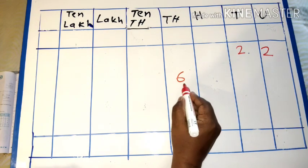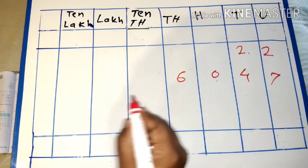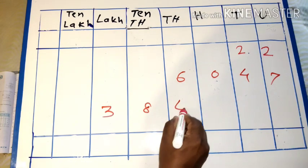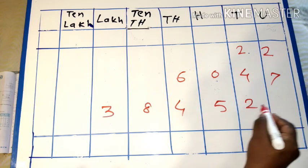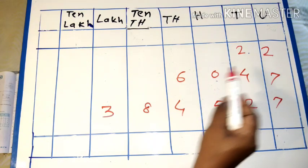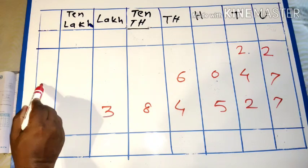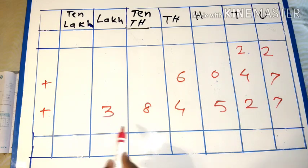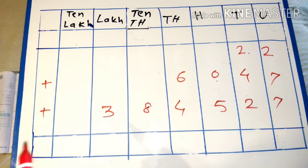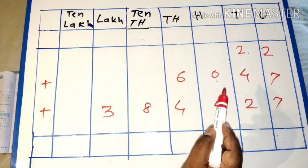The answer is eighty lakh twenty-four thousand three hundred and thirty-three. Example twenty-two: twenty-two plus six thousand and forty-seven plus three lakh eighty-four thousand five hundred and twenty-seven.